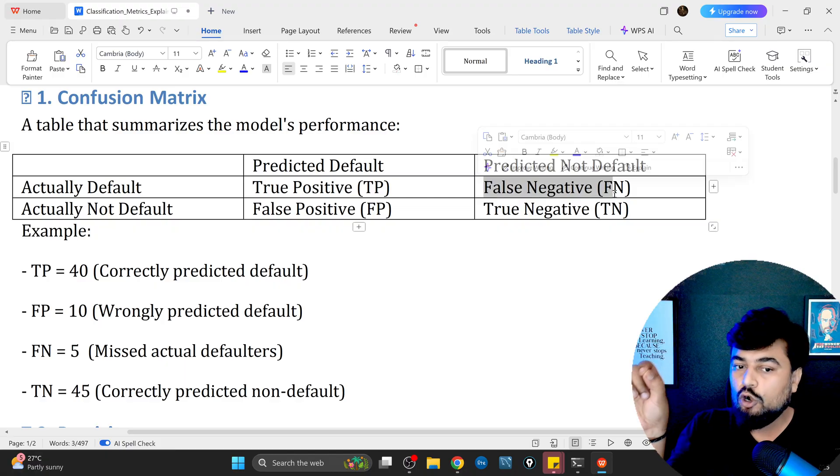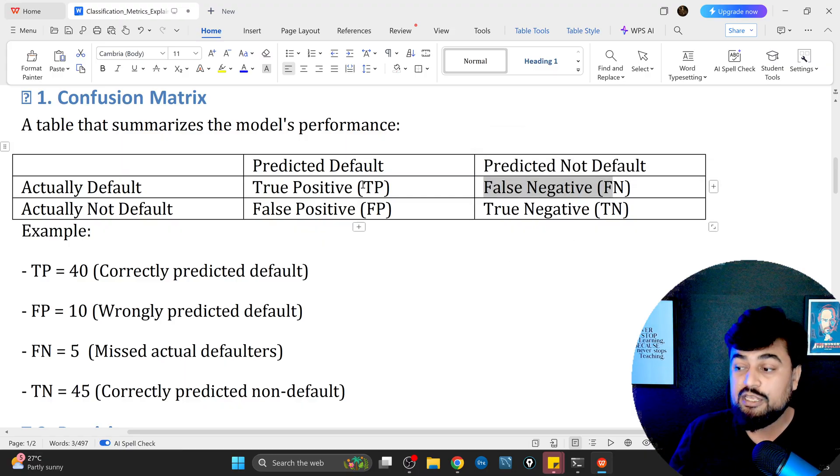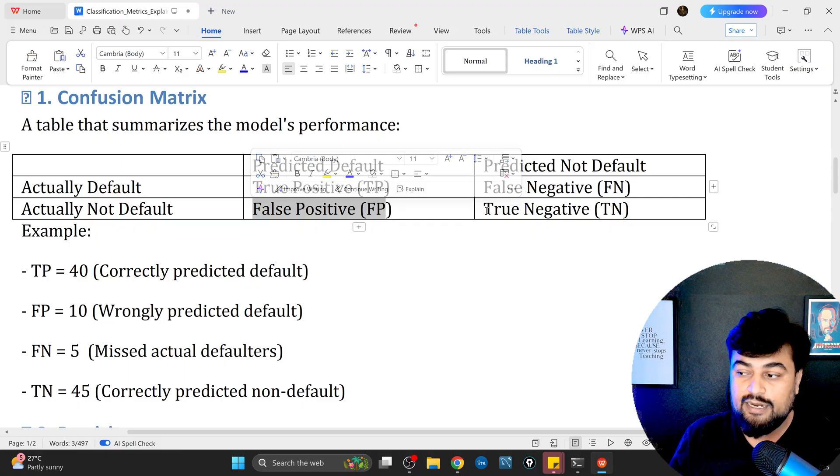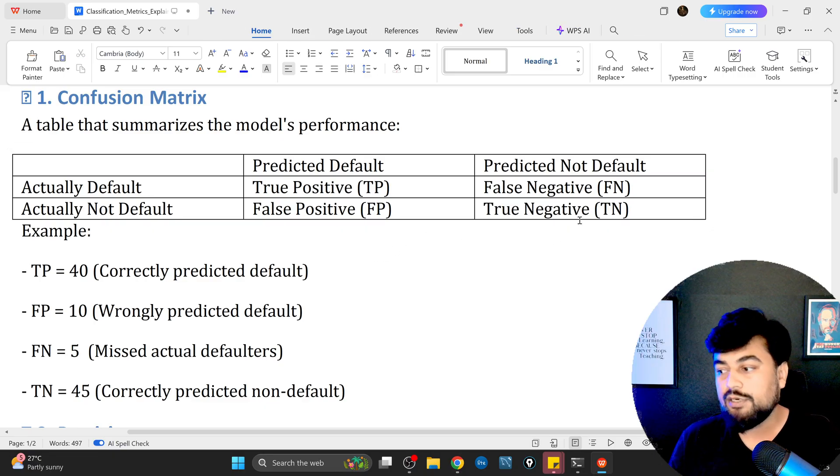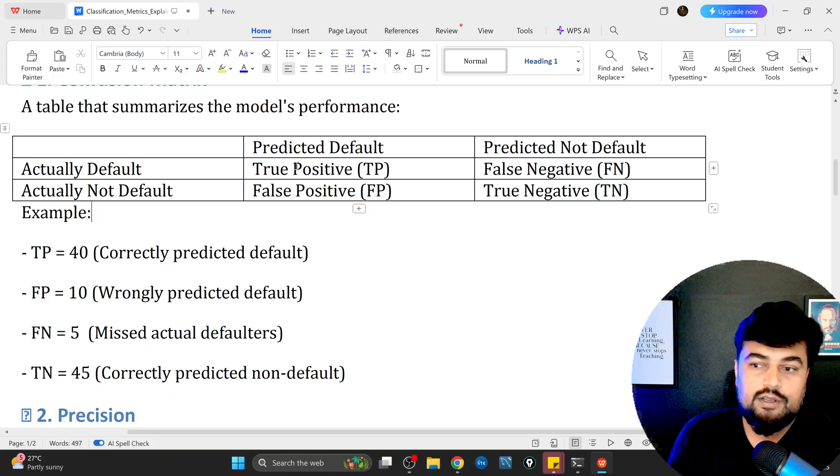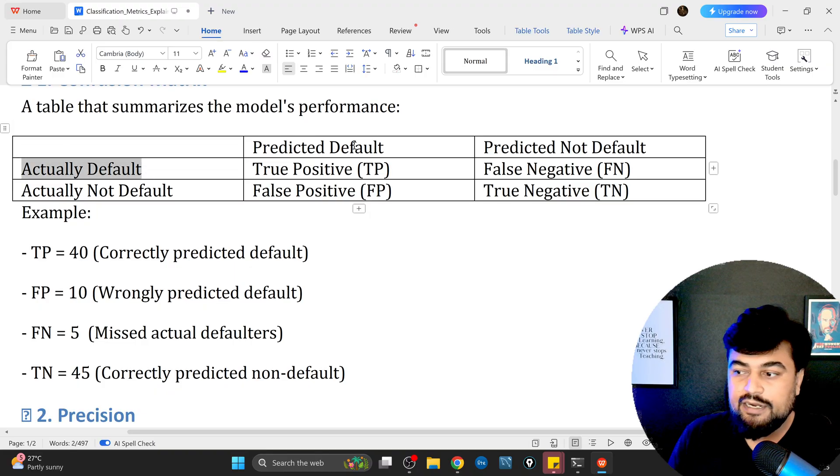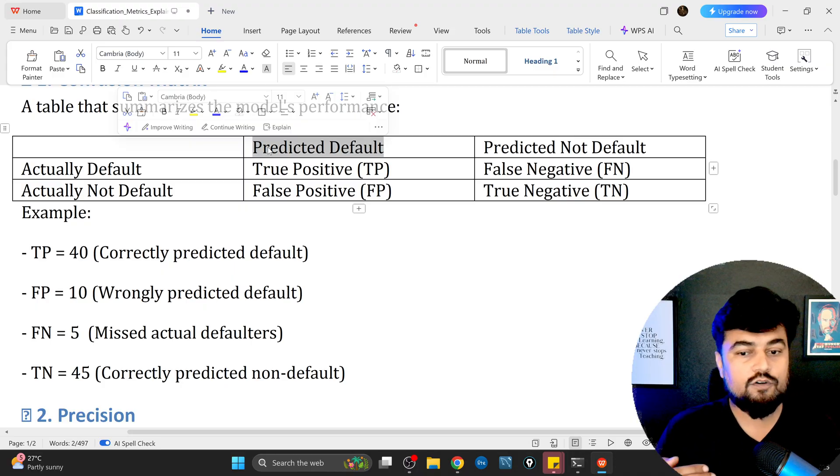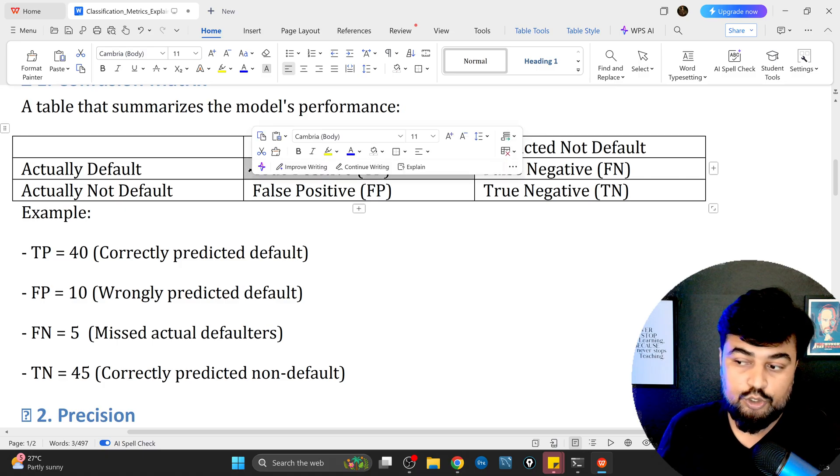True positive, false negative. Then below TP you have false positive, then you have true negative. Let me explain: true positive means the actual value is also default and predicted value was also saying default. We predicted this person will default and actually that person defaulted. That is known as a true positive case.